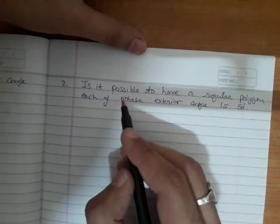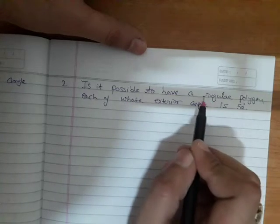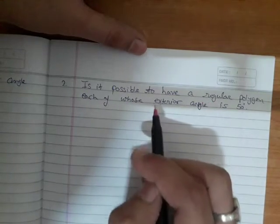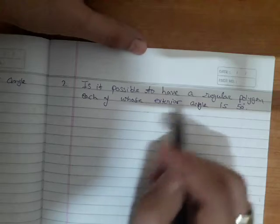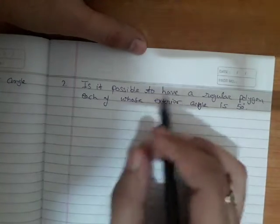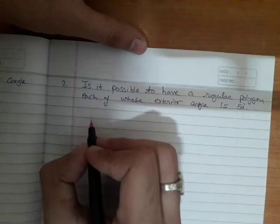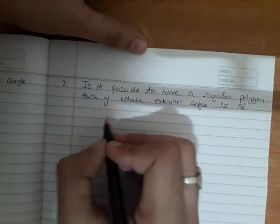then we can say the given angle is possible for a regular polygon. If the number comes as a mixed fraction, then the given angle is not possible. First, we have the formula for each exterior angle.